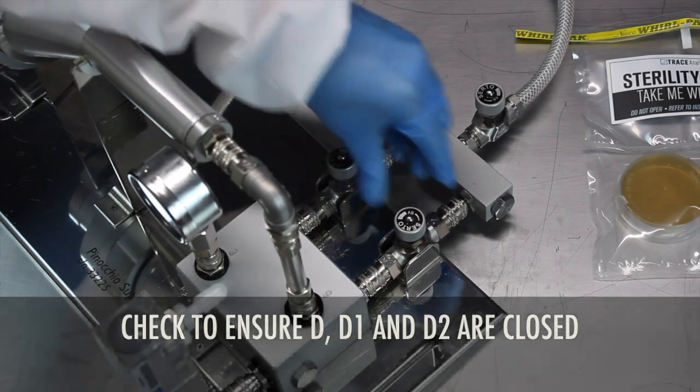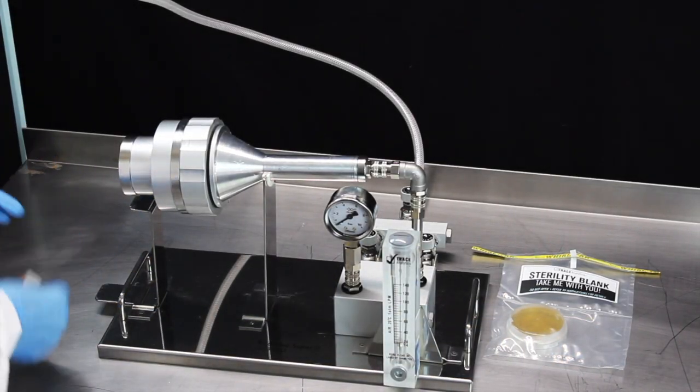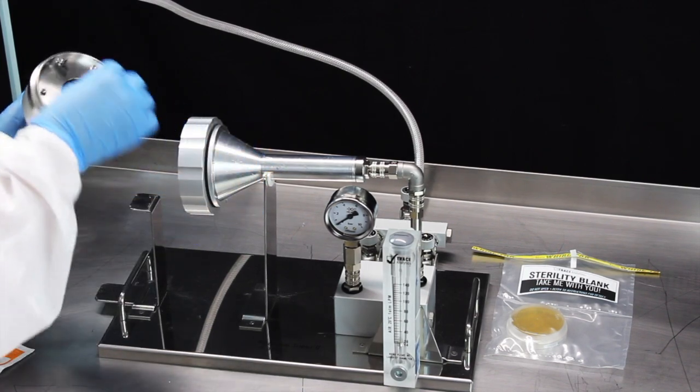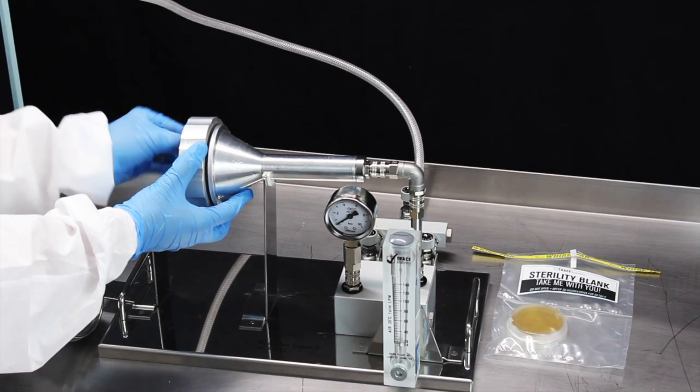With the air valves closed, unscrew the contact plate housing from the collar. Using the alcohol wipes provided, wipe down the inside of the plate housing and the inside of the collar. Allow 2-5 seconds for drying.